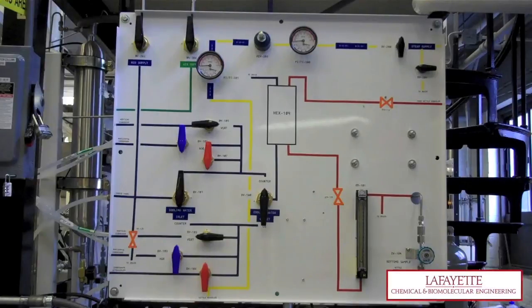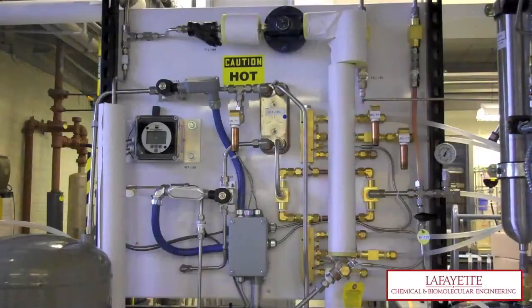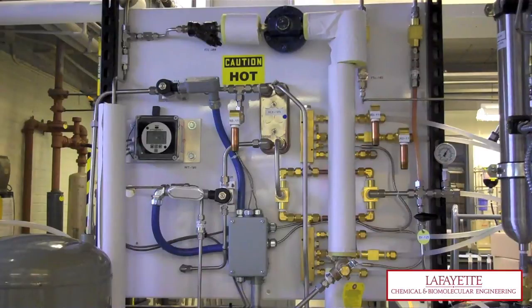The valves that operate the cooling water are located on the right panel of the structure. Before the cooling water is turned on, the system must be drained from the previous operation.